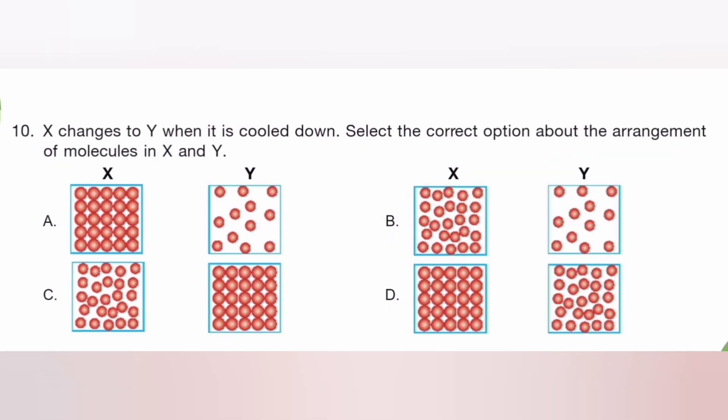X extends to Y when it is cooled down. Select the correct option about the arrangement of the molecules in X and Y. The answer is C.